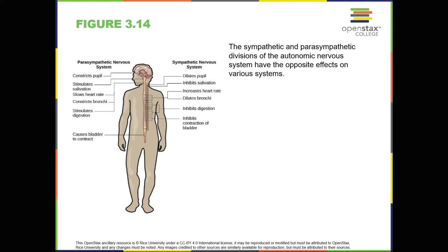Homeostasis is a state of equilibrium in which biological conditions like body temperature are maintained at optimal levels. The sympathetic nervous system is activated when we're faced with stressful or high-arousal situations. The activity of this system was adapted for our ancestors, increasing their chances of survival. Imagine, for example, that one of our early ancestors out hunting suddenly disturbs a large bear with her cubs.